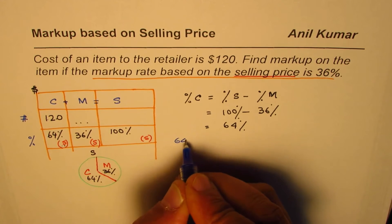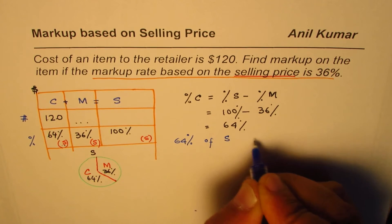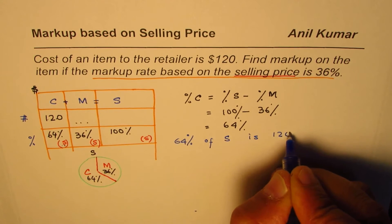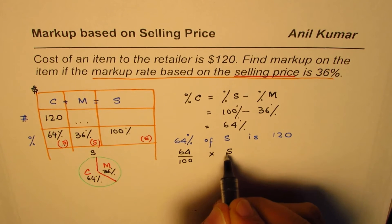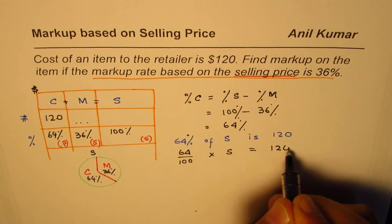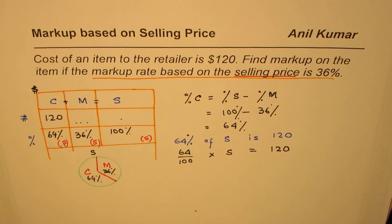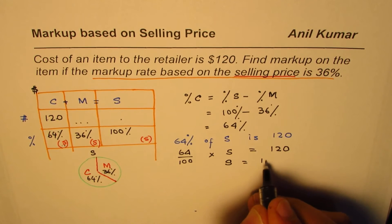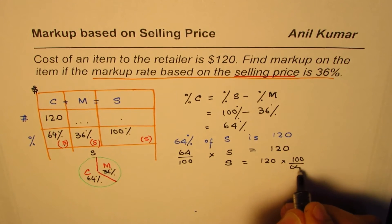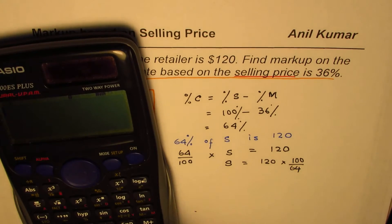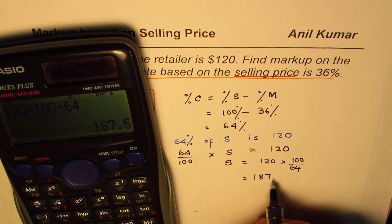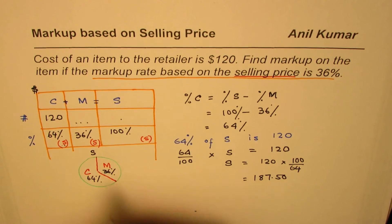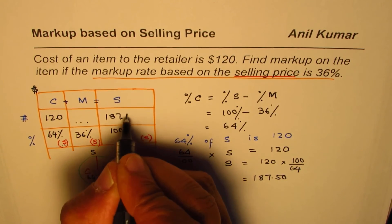Writing it as an equation: (64/100) × Sales = 120. Rearranging to find sales: Sales = 120 × (100/64). Calculating that gives us 187.50. So we get $187.50 as the selling price.